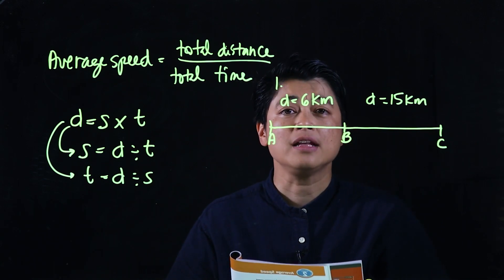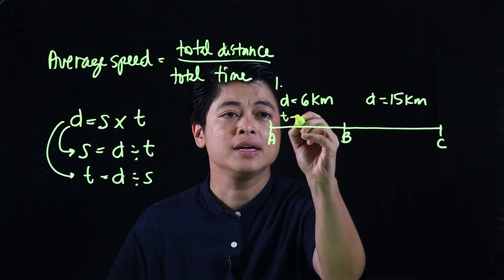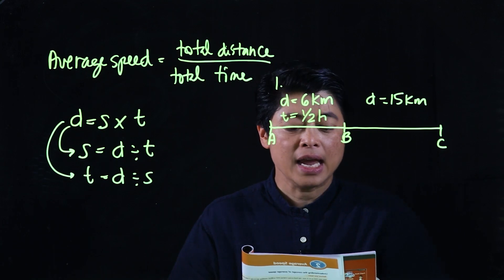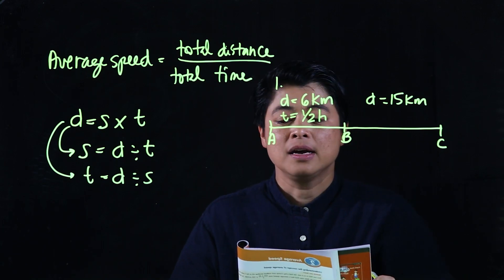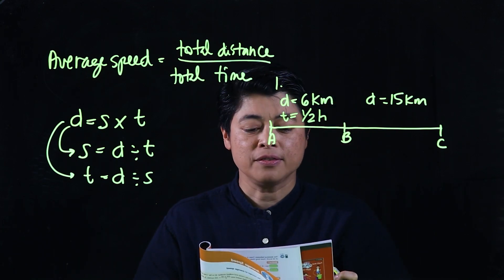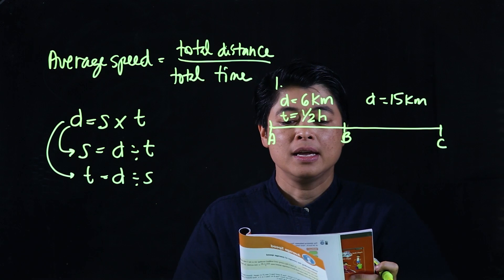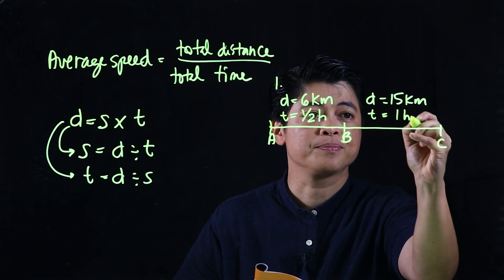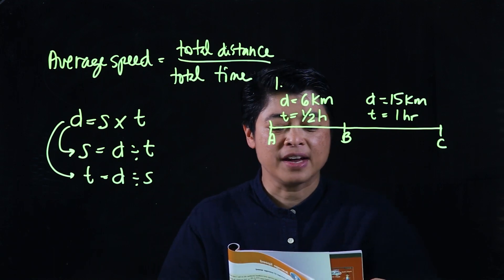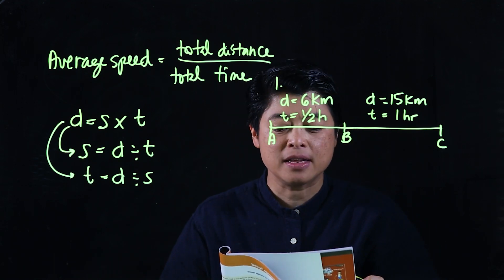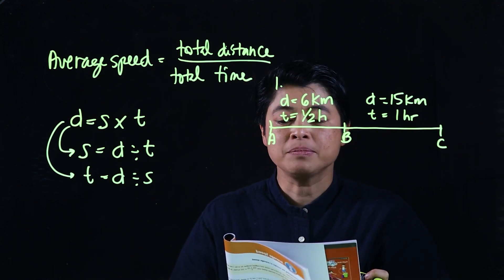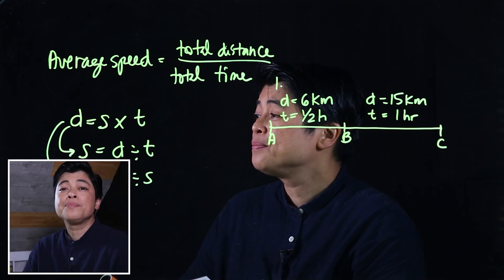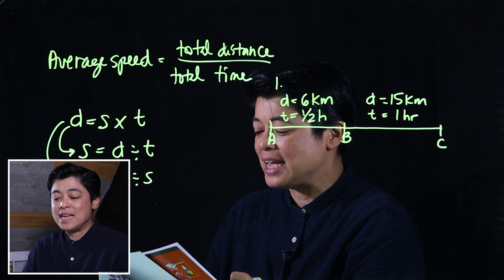Miss Nang takes half an hour to cycle from Town A to B — so time is equal to one-half hour. And another hour to cycle from Town B to C — so that's one hour. The question asks: find Miss Nang's average speed for the journey from Town A to B.